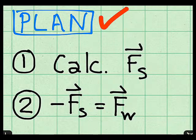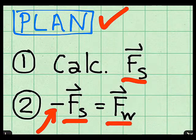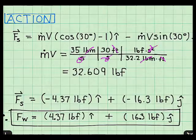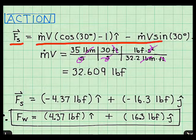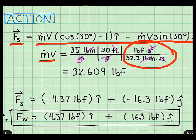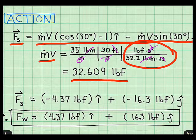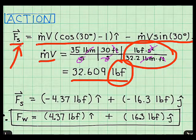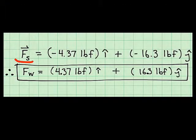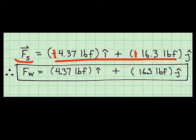My plan is to calculate the force on the support with the momentum equation, then multiply by negative one to get the force of the water on the vane. I wrote the result from the momentum equation and calculated m-dot times v. Notice how I carry and cancel units — this is essential for the correct result. The momentum flow works out to be 32.6 pounds force, as expected from dimensional homogeneity. The force of the support is given, then multiplied by minus one, so the signs flip to give the final answer: the force of the water on the vane is about 4 pounds horizontally and 16 pounds approximately upward.